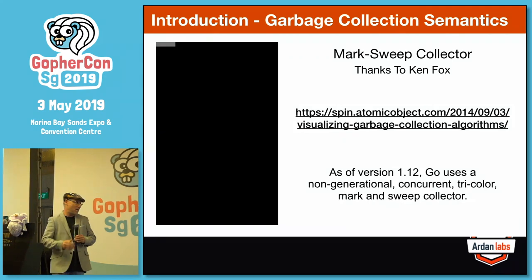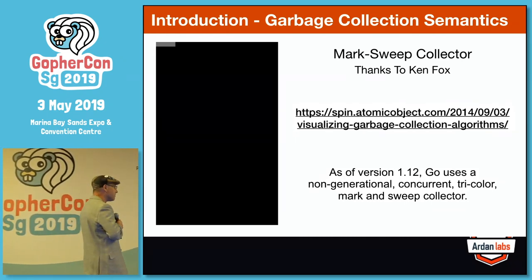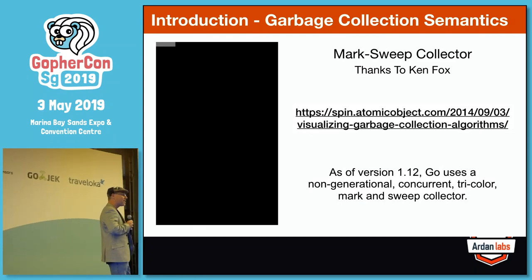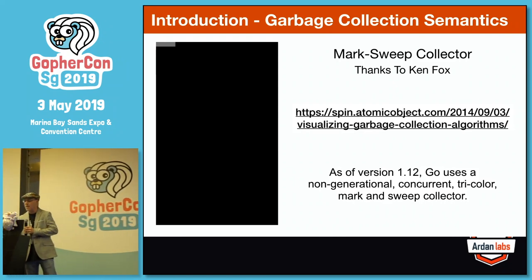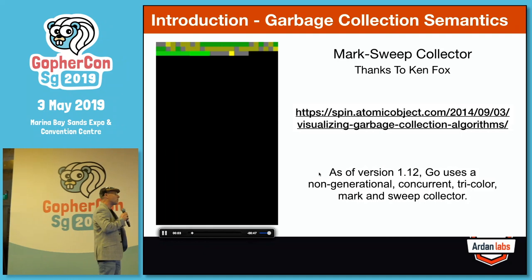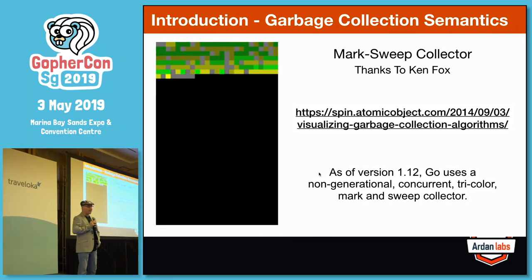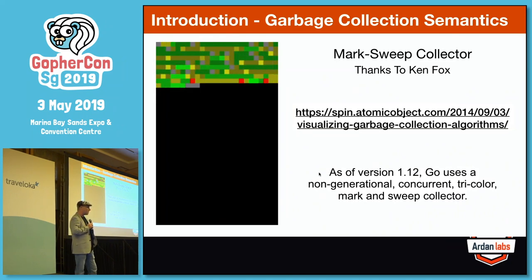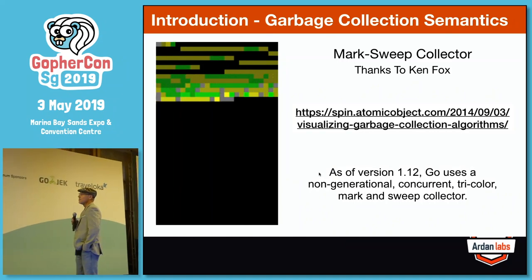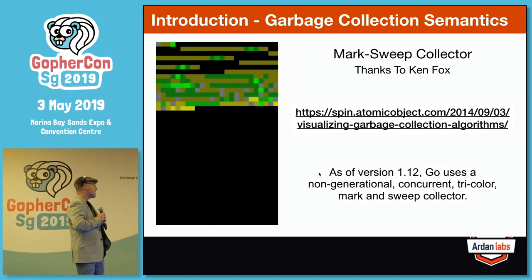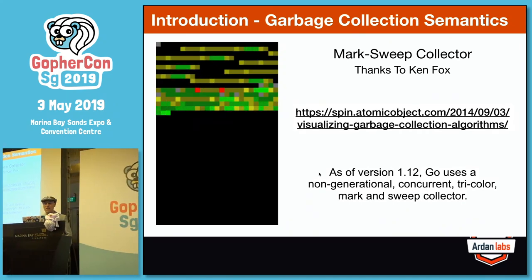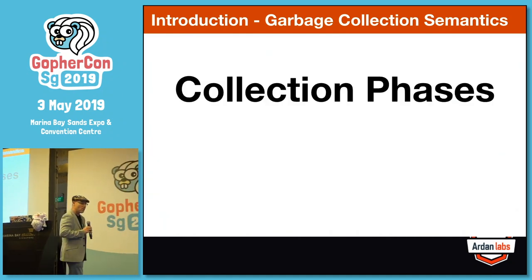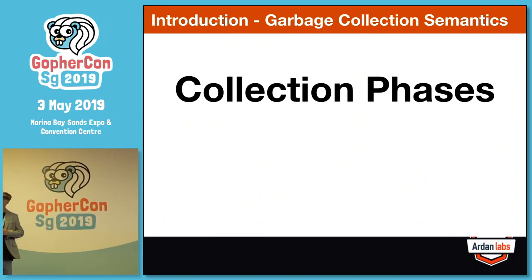I wanted to show you a simulation of a mark and sweep collector. As of 1.12, Go uses a non-generational concurrent tri-color mark and sweep collector — there are a lot of words there. If you really want to know how the implementation works, go right ahead, but I don't think it's going to make you a better Go developer. This is a cool visualization of what a mark and sweep collector looks like. In a couple seconds you'll see it do a quick collection. Again, I want to focus on behaviors and not deep implementation details.